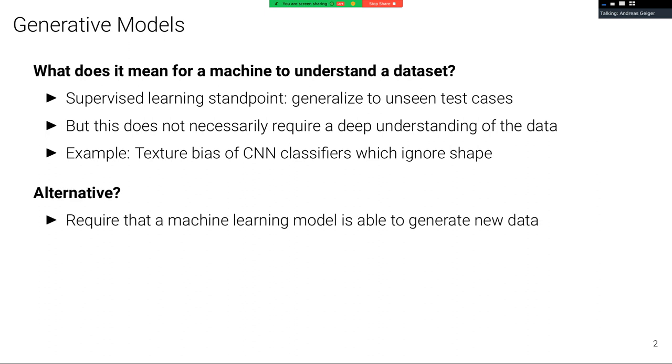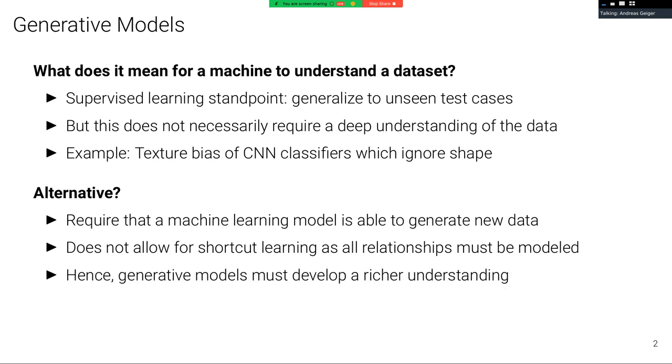So what could be an alternative? An alternative could be to require that a machine learning model is able to generate new data. This does not allow for shortcut learning, as all relationships must be modeled. Hence, generative models must develop a richer understanding compared to supervised learning models. And moreover, unsupervised learning is arguably closer to how humans learn.